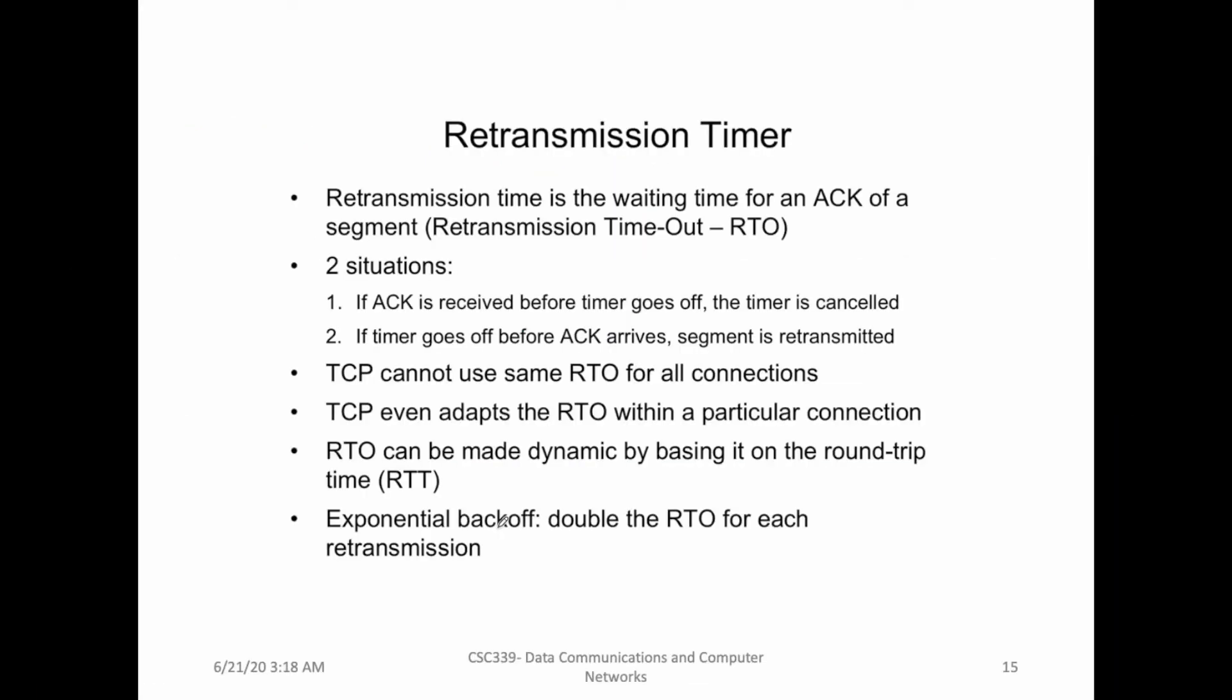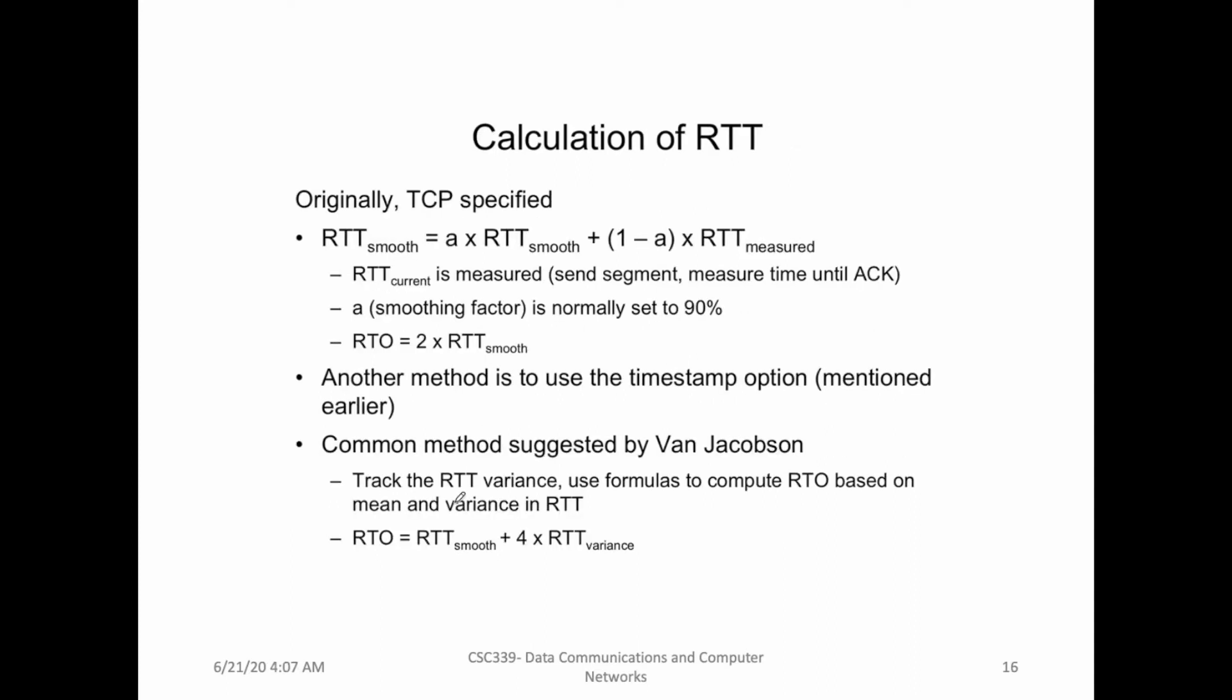So let's go back to the slide set. We were talking about the first timer which is the retransmission timeout RTO. This RTO is calculated based on RTT and the problem here is that RTT is variable, so we have to calculate estimated RTT or RTT smooth, and this is alpha into RTT plus the current value of RTT smooth plus one minus alpha into sample RTT. And here the value of alpha is 0.125.